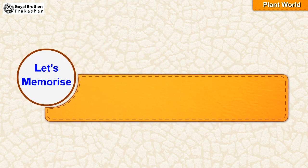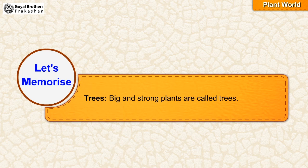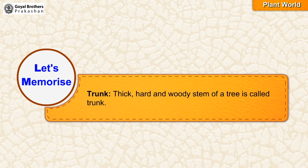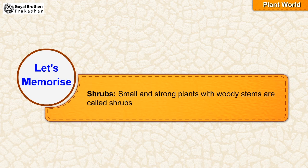Let's memorise. Trees: big and strong plants are called trees. Trunk: thick, hard and woody stem of a tree is called trunk. Shrubs: small and strong plants with woody stems are called shrubs.